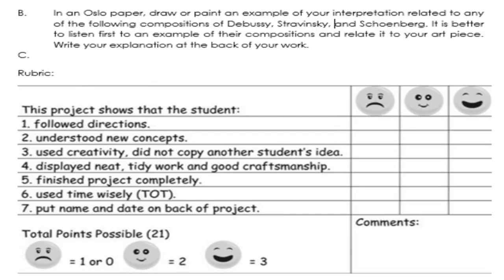Letter B Activity: On an Oslo paper, draw or paint an example of your interpretation related to any of the following compositions of Debussy, Stravinsky, and Schoenberg. Listen first to an example of their compositions and relate it to your piece. Write your explanation at the back of your rubric. This project shows the student: 1) Follow directions; 2) Understand the new concepts; 3) Use creativity and did not copy another student's idea; 4) Display neat, tidy work and good craftsmanship; 5) Finish the project completely; 6) Use time wisely.